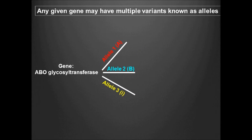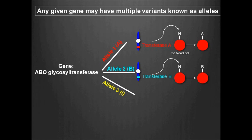A gene may come in several variants called alleles. The ABO glycosyl transferase gene has three major variants. Allele 1, denoted by capital A, produces a glycosyl transferase that converts the H antigen on the surface of red blood cells to an A antigen. Allele 2, denoted by capital B, produces a glycosyl transferase that converts the H antigen to a B antigen.